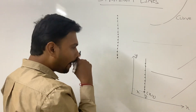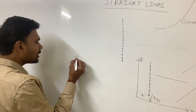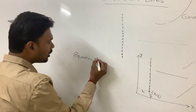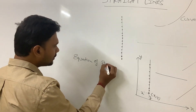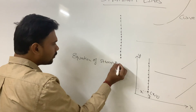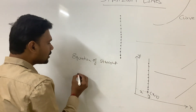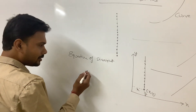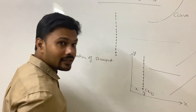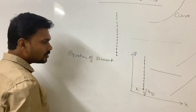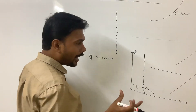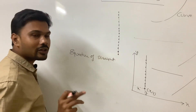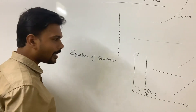What do we mean by the equation of a straight line? The equation of a straight line means we write an equation in terms of x and y such that all those values of x and y satisfy a particular relation. Let me give you an example.